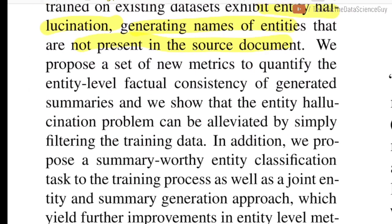In this paper, authors propose a new metric to quantify entity-level factual consistency in generated summaries, because ROUGE is not typically designed for that — it is just the n-gram overlap between the generated and actual summary. So introduction of a new metric is one contribution of this paper. Apart from this, authors also proposed two training mechanisms that try to address this issue.